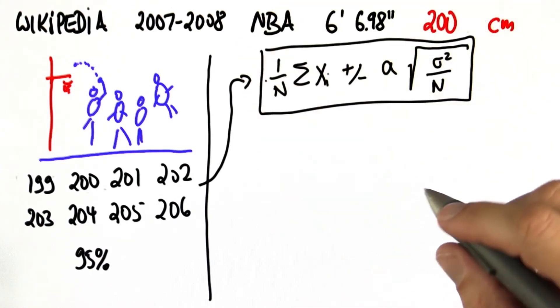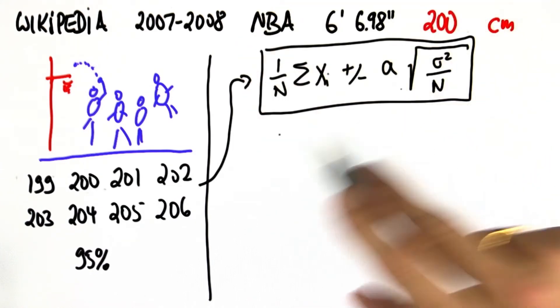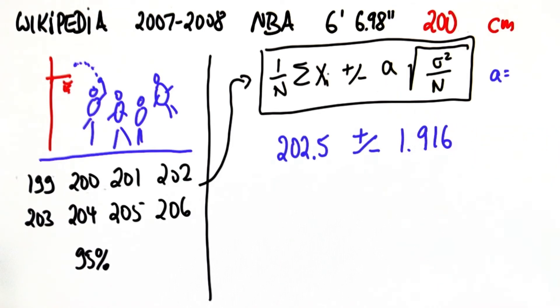That formula you've now seen many times in practice. When I plug this in here with the appropriate a, I get for the mean 202.5 plus minus 1.916.